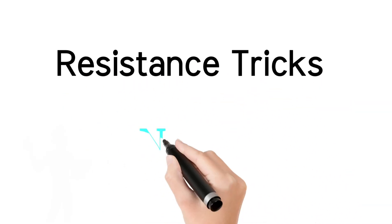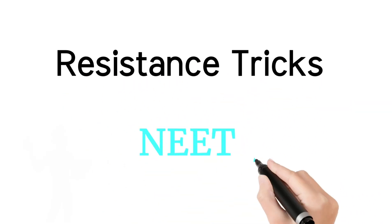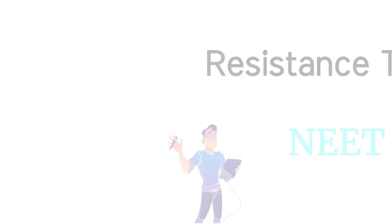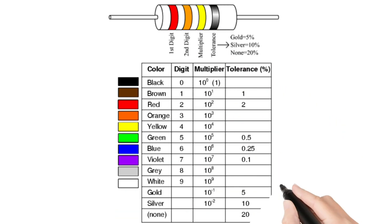Hello guys, today in this video we are going to see about the resistor tricks related with the color code of resistors in the subject of physics. First we will see what is the use of these and how the color code of resistors can be used. The first color is for the first digit, the second color is for the second digit, the third color represents the multiplier level, and the fourth color represents the tolerance level. Mainly, questions are asked with gold and silver — gold for 5% and silver for 10%.